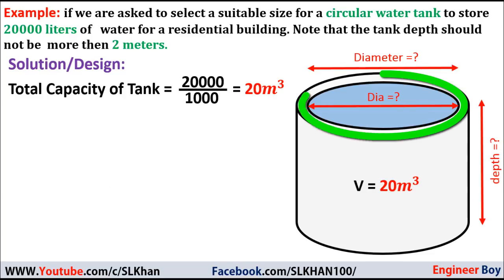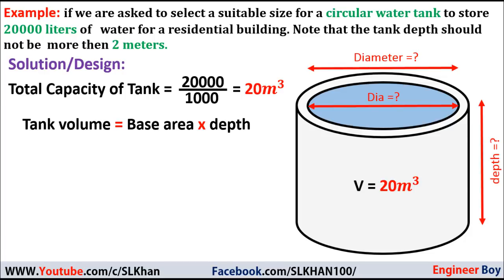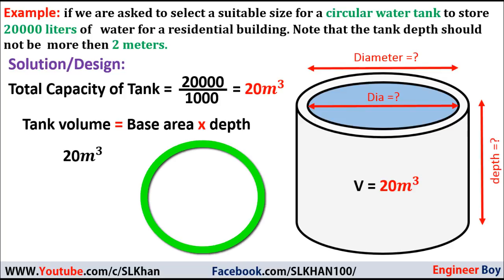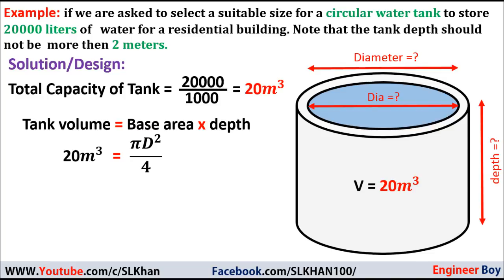The tank is circular in plan, or cylindrical in solid form, which means the volume equals the area of the base times the height or depth. So the volume, which is 20 cubic meters, equals the area of the base. Since the base is circular, area equals π d² divided by 4, times the depth — giving us: 20 = (π d²/4) × depth.